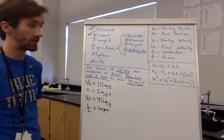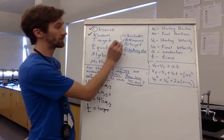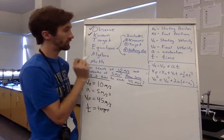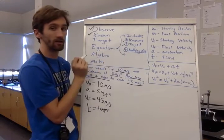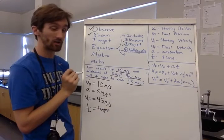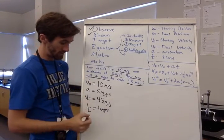Now I have to choose an equation. I need something that includes all of my knowns, my target, and nothing else. Nothing that I don't have. So I look through here.